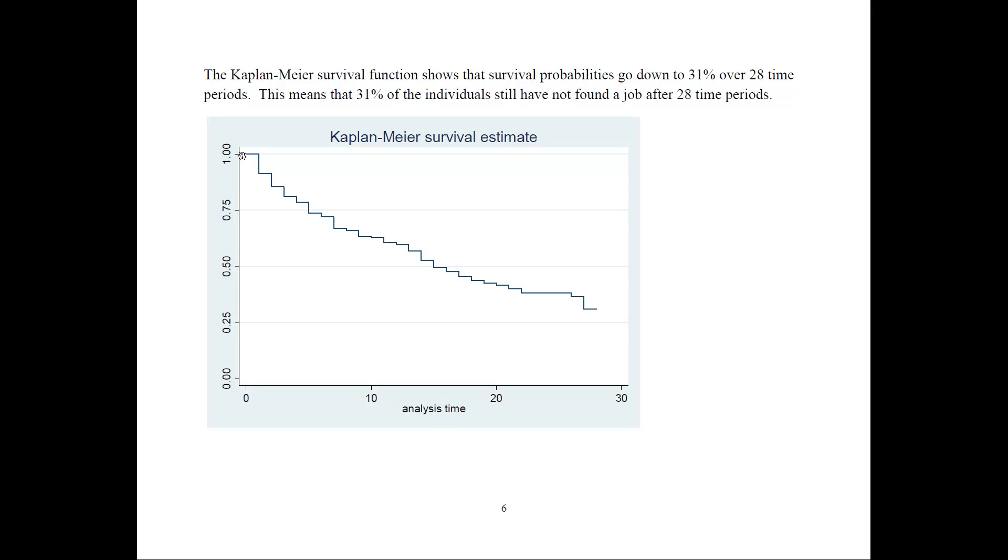So in the first period, we started with 100%. After one period, we had the 91%. If you remember from the table, we're just drawing these numbers from the table. Then the next one is going down and so on, and after 28 periods,